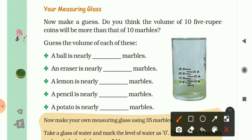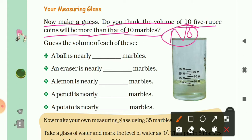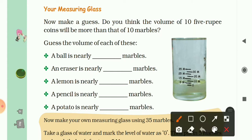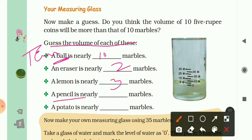Now, using a measuring glass, make a guess: do you think the volume of ten five-rupee coins will be more than that of ten marbles? No - the volume of ten marbles will be more than ten five-rupee coins because marbles are bigger in size. Now guess the volume of each object: a tennis ball is around ten marbles, an eraser is about two marbles, a lemon is three marbles, a pencil is about two marbles.